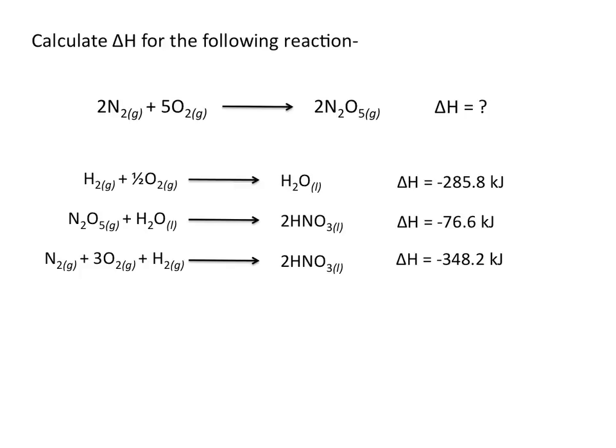It's helpful to look for a compound in the reaction of interest that is found only once in the given equations. N2O5, which is on the product side in the reaction of interest, appears in only one of the given equations — and it's on the reactant side.